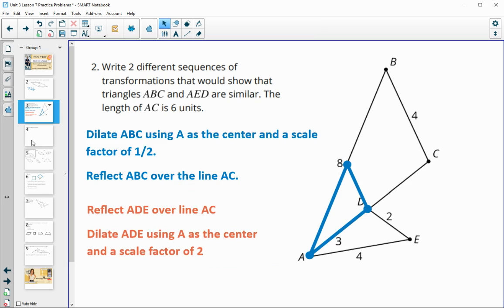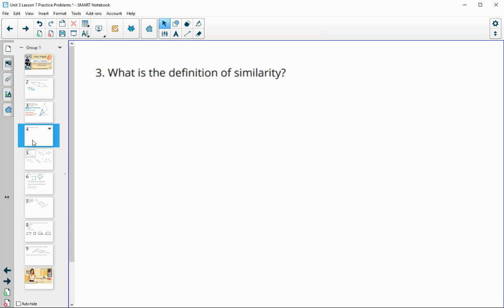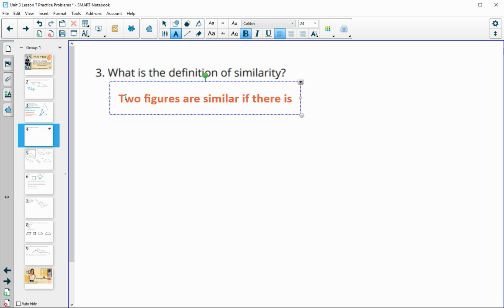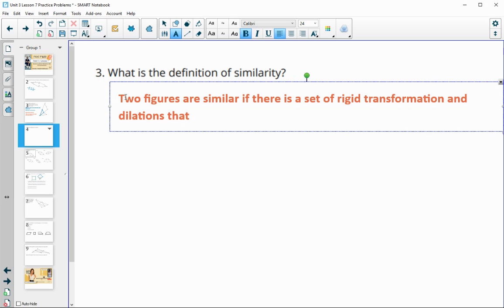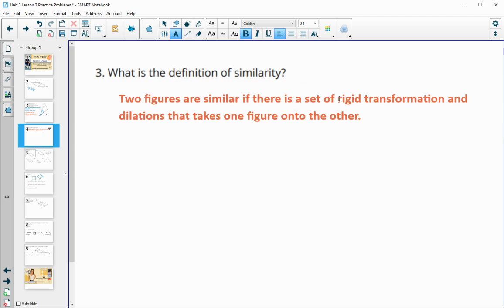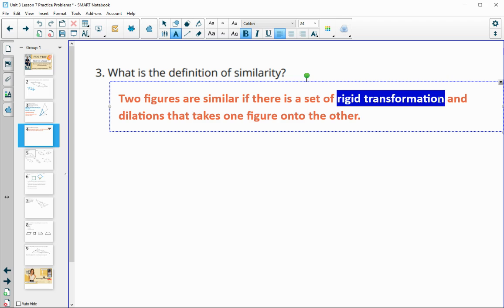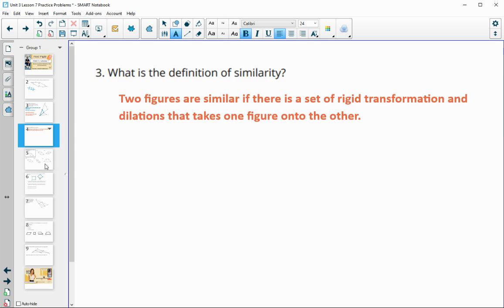Number three: what is the definition of similarity? So remember, two figures are similar if there is a set of rigid motions or rigid transformations and dilations that takes one figure onto the other. So rigid transformations is just for keeping them congruent, and then when you add in the dilations, that changes the size. So if there's a set of both of those, then the figures are going to be similar.